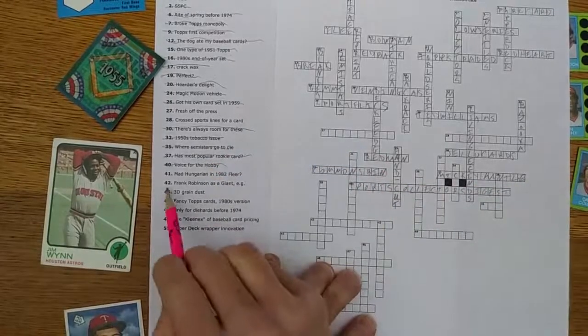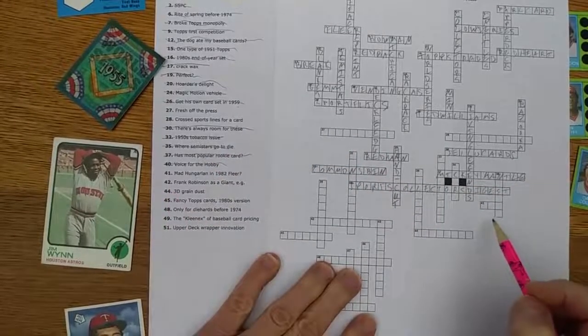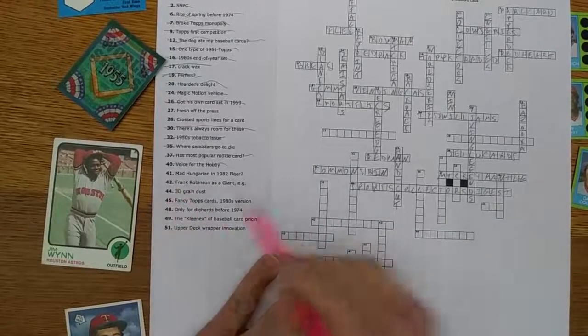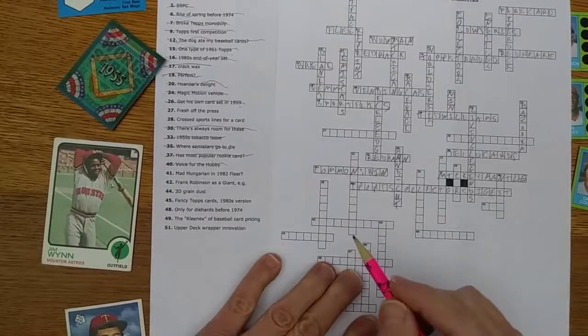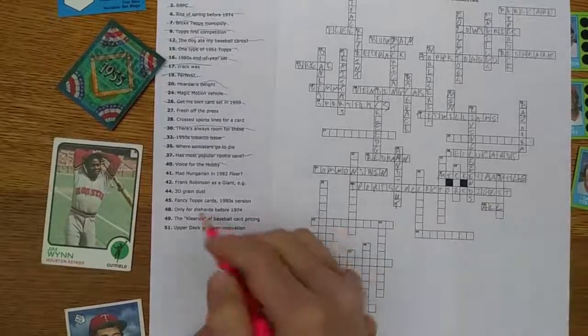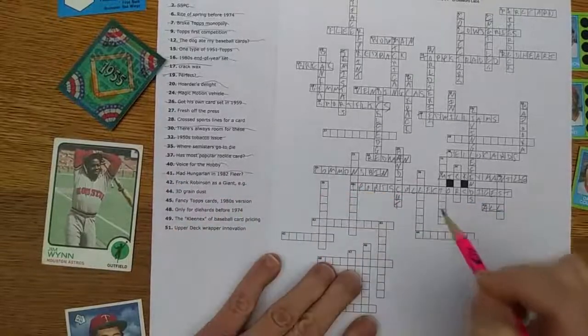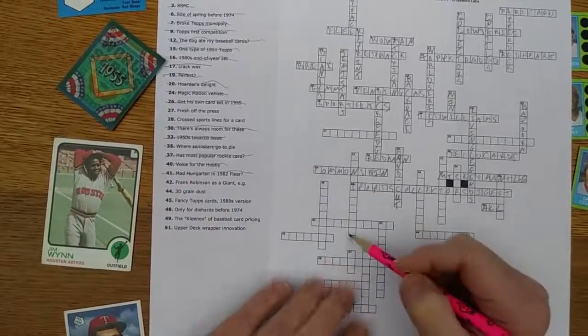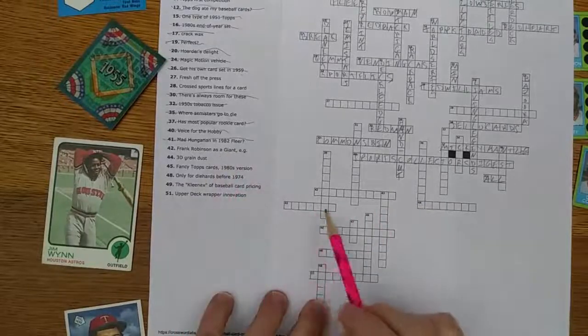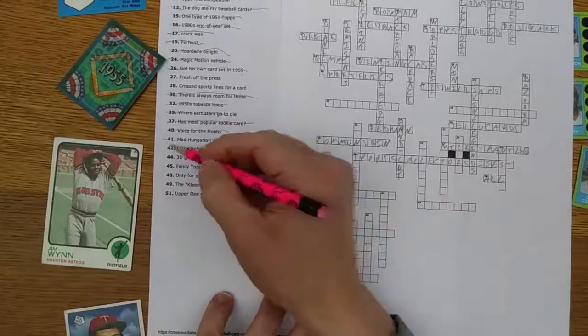Mad Hungarian in 1982 Fleer: Al Harvasky, the mad Hungarian, had a few variations of his card. One or two showed him at five foot one, and one of them showed him as Al instead of Al. I'm sure he was everything to his family, so that makes sense. Frank Robinson as a giant - that's going to be like manager card, so that's an example.